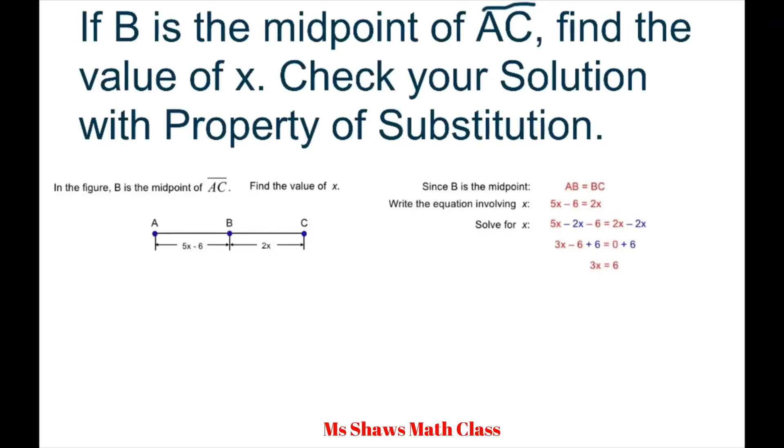We're going to check our solution with the property of substitution so we can get the concept better. We have AB here and BC here. If B is the midpoint, then each side should equal each other. So that's what we have here, and I'm going to write this out again.